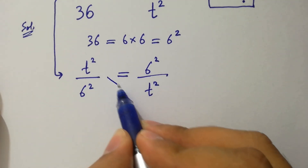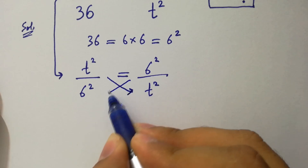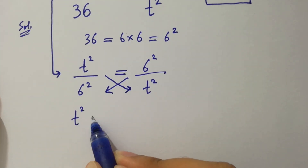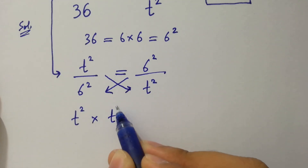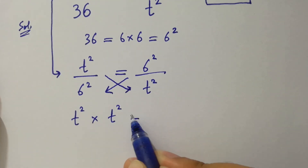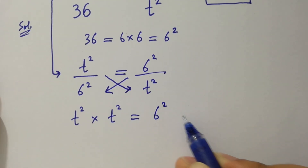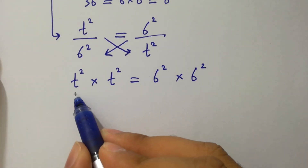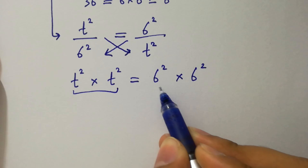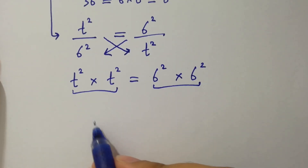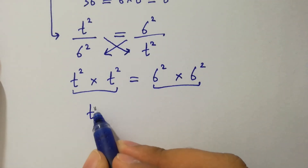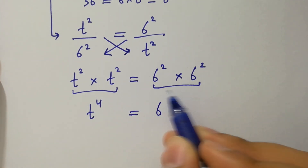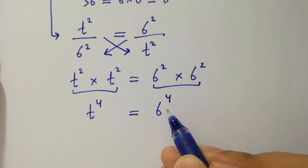By cross multiplication, we have t² times t² equals 6² times 6². Since the base is the same, we add the powers: t to the power 2 plus 2, which is 4, equals 6 to the power 2 plus 2, which is 4.